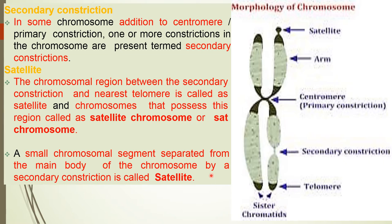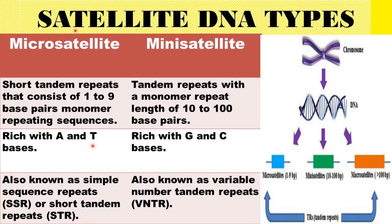A small chromosomal segment separate from the main body of the chromosome by a secondary construction is called a satellite. Satellite DNA are of three types: one is microsatellite, another is minisatellite, and the third is macrosatellite — but mostly the two types more important are microsatellite and minisatellite.